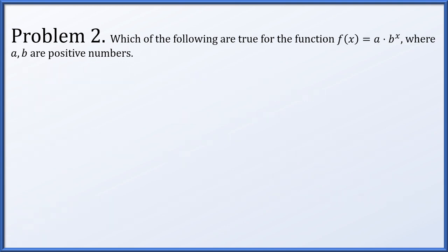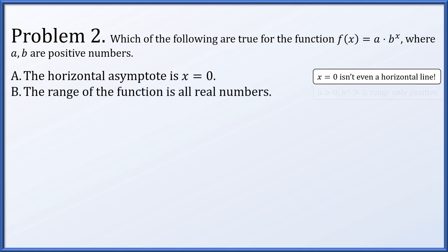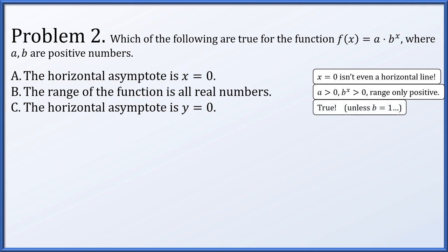In problem 2, we have f(x) = a·b^x where a and b are both positive, and we need to determine which statements are true. Is the horizontal asymptote x equals 0? That's not even a horizontal line — definitely false. Is the range all real numbers? No — the exponential part gives positive numbers, and a is positive, so you can only get positive outputs. Is the horizontal asymptote y equals 0? This is true. If b is greater than 1, b to large negative powers is very small, giving asymptote 0. If b is less than 1, b to large positive powers collapses to 0 — still asymptote y equals 0. Assuming b is not exactly 1, yes, there is a horizontal asymptote of y equals 0.